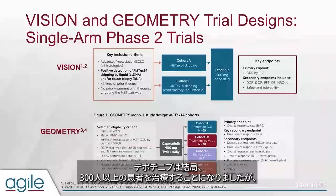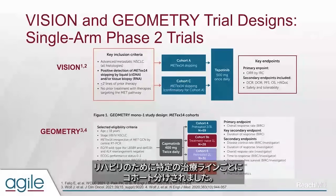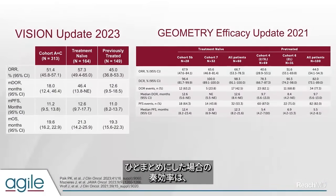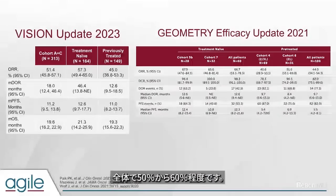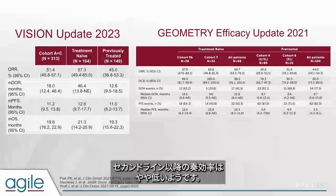Tepotinib treated over 300 patients in two essentially identical cohorts. Capmatinib treated patients parsed out by specific lines of therapy cohorts. Taking a look at the data, they're more similar than different. Overall response rate was between 50% to 60% depending on the drug and line of therapy — closer to 60% in the frontline setting and a bit lower in the second line and beyond. Median PFS overall was around 12 months, and median overall survival was between 20 to 21 months for both drugs.